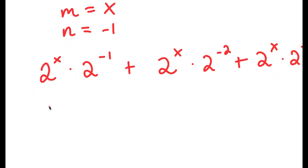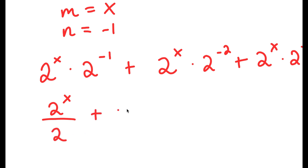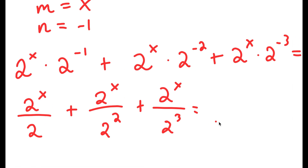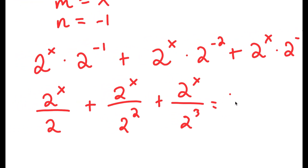Now, 2 to the power of negative 1 is the same thing as 1 over 2, so multiplying by 2 to the power of x gives 2 to the power of x over 2. Then I have plus 2 to the power of x over 2 squared, plus 2 to the power of x over 2 to the power of 3, and this is equal to 448.